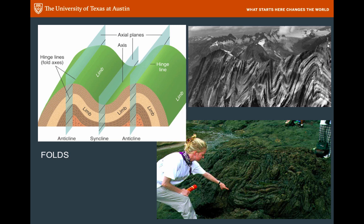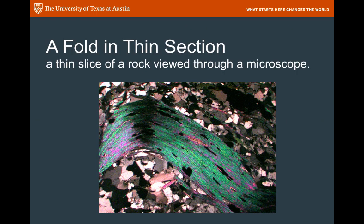Folds form on all kinds of scales. You can see in the upper right a very large fold — it must have taken a lot of force to cause this very striking folding of these layers tightly up and down at very tight angles. But folds are also visible at an outcrop level; here's a geologist pointing out a much smaller fold. And smaller still, you can see folds in thin section. This is a microscopic view of a biotite mineral that's been folded — if we were to slice those rocks from either of the previous folds and look at the minerals, we'd probably see something like this under the microscope.